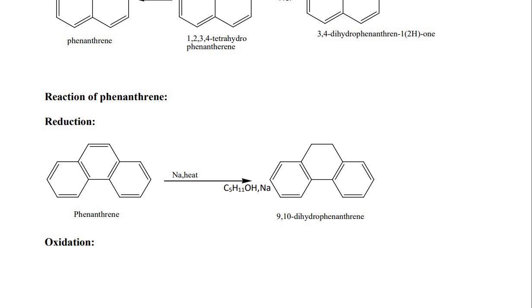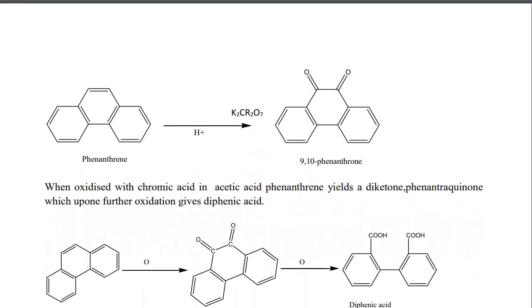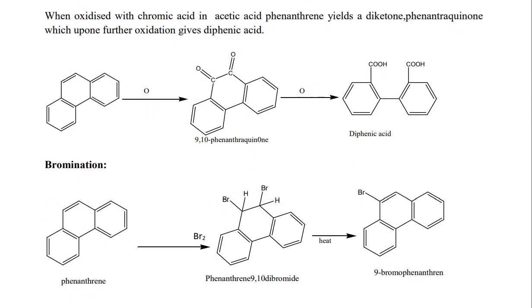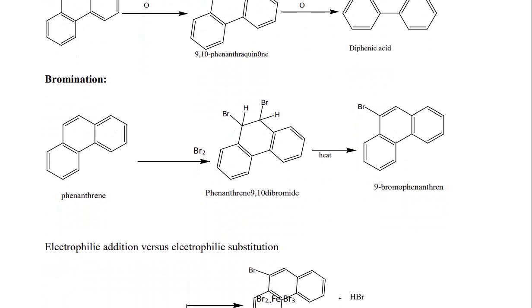Reactions of phenanthrene: reduction gives 9,10-dihydrophenanthrene. Oxidation with chromic acid in acetic acid gives phenanthroquinone (a diketone), which upon further oxidation gives diphenic acid. Bromination: phenanthrene undergoes bromination to give phenanthrene-9,10-dibromide, and on heating this gives 9-bromophenanthrene. This demonstrates electrophilic addition versus electrophilic substitution at the 9,10 position.